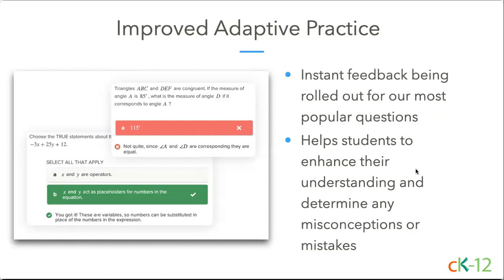We're also making our adaptive practice more of a learning opportunity by including direct feedback for key questions and concepts, starting with adaptive practice in our interactive math for middle school in the Flexbook 2.0 environment. Students will see feedback to enhance understanding when they get a question right, and to help them determine where misconceptions or mistakes were made for wrong answers. Our science team is starting to roll these out for key concepts as well.